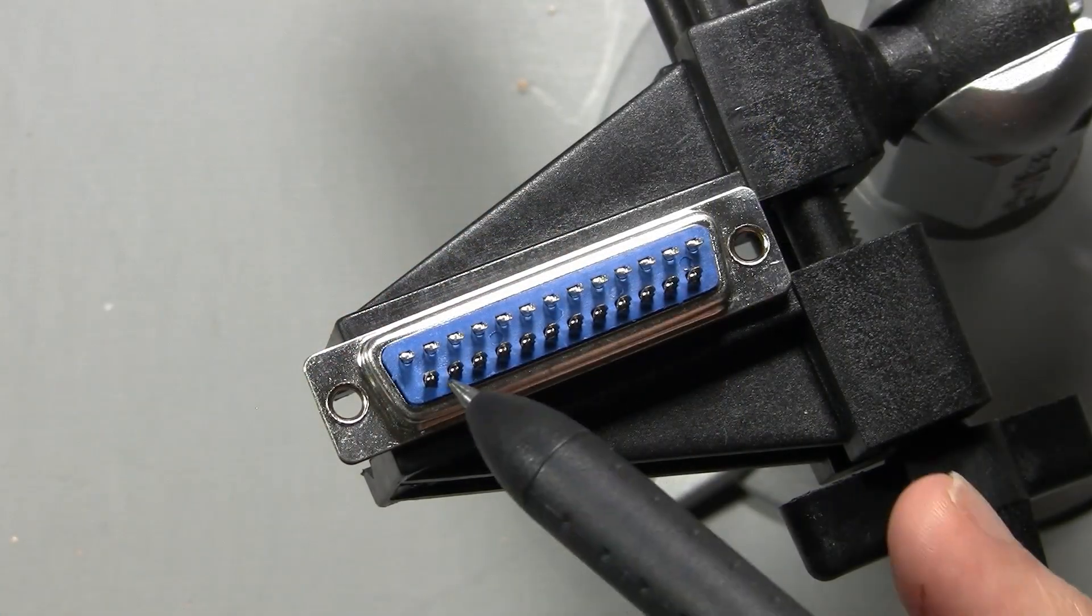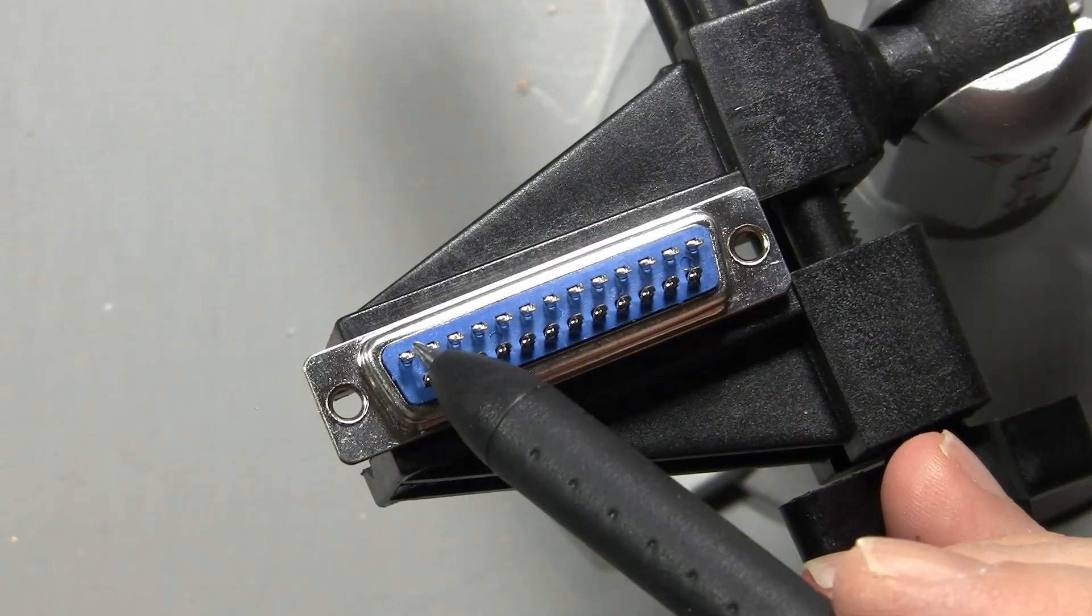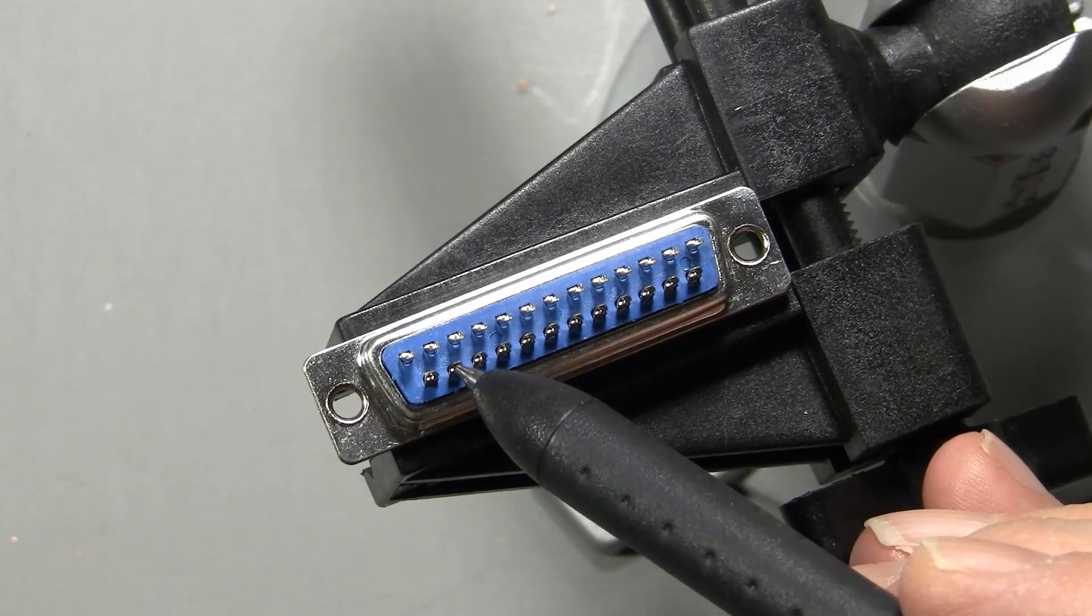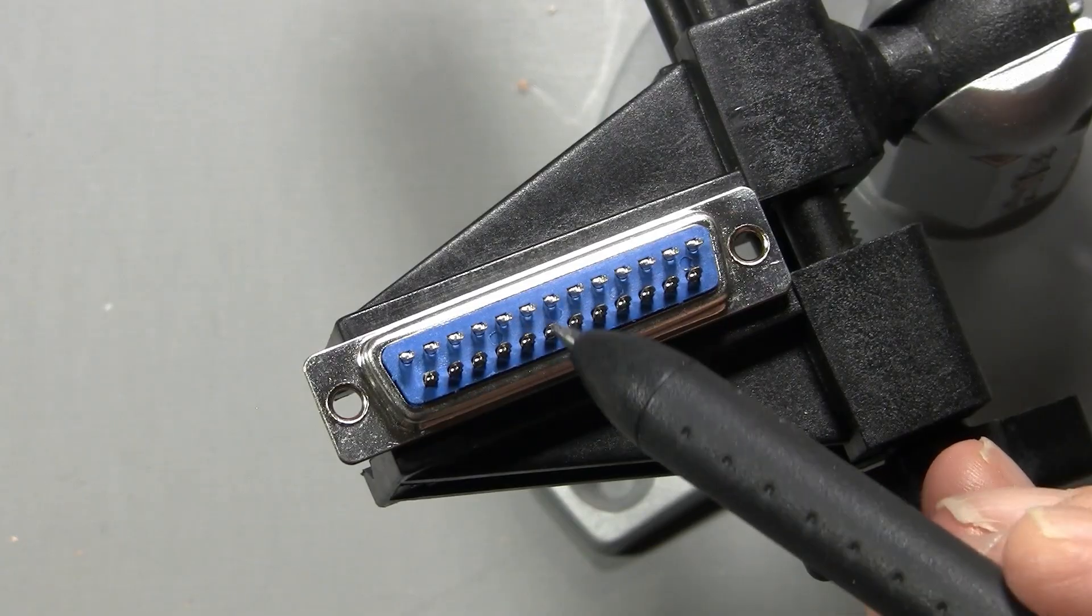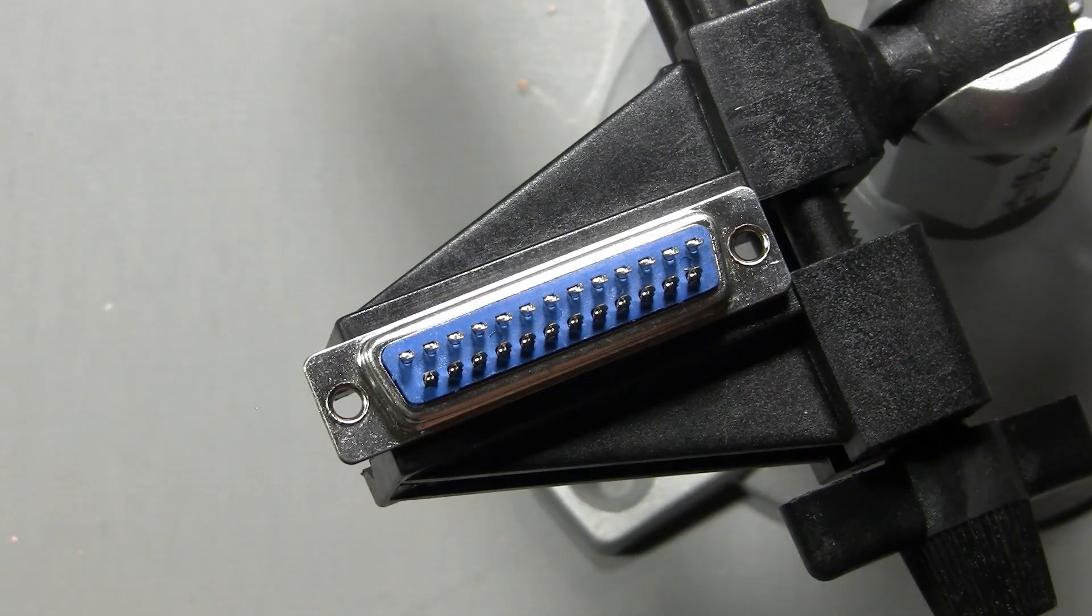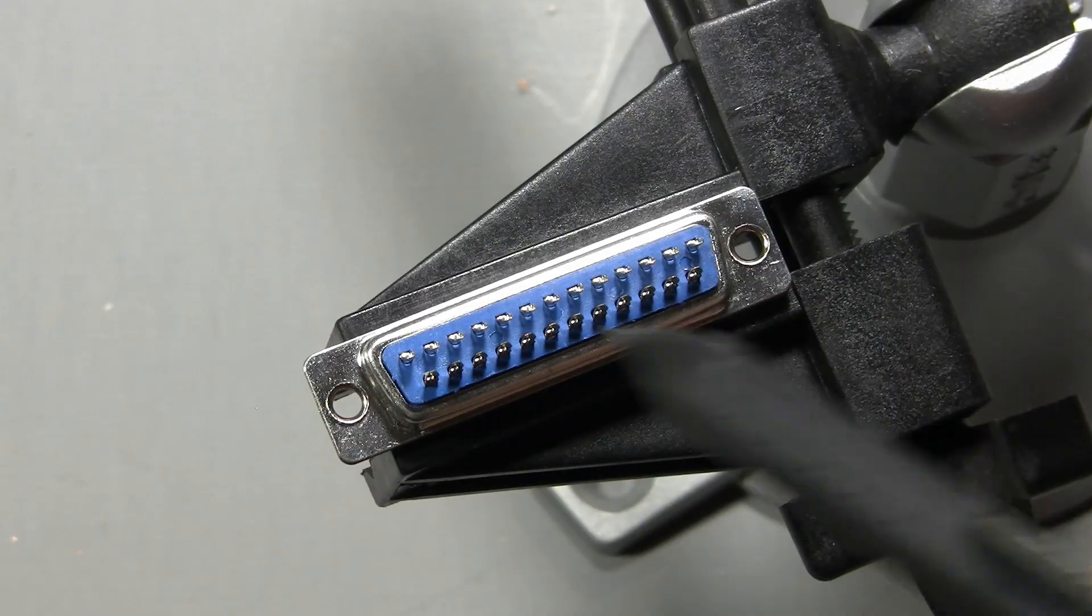Now looking at the D-Sub connector on the Tascam layout, it's really quite simple. You skip this pin here, and it's ground, low, high, ground, low, high, ground, low, high, and it goes that way all the way through the connectors. On the Yamaha pinnings, and some of the other ones that you'll see, these will be all grounds, and these will be all signal.